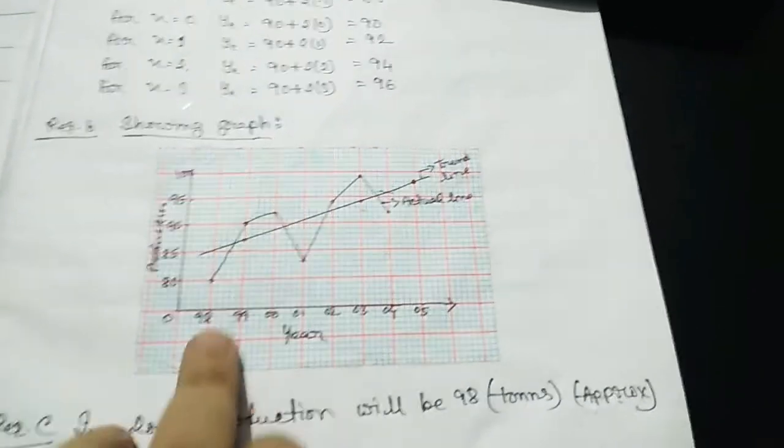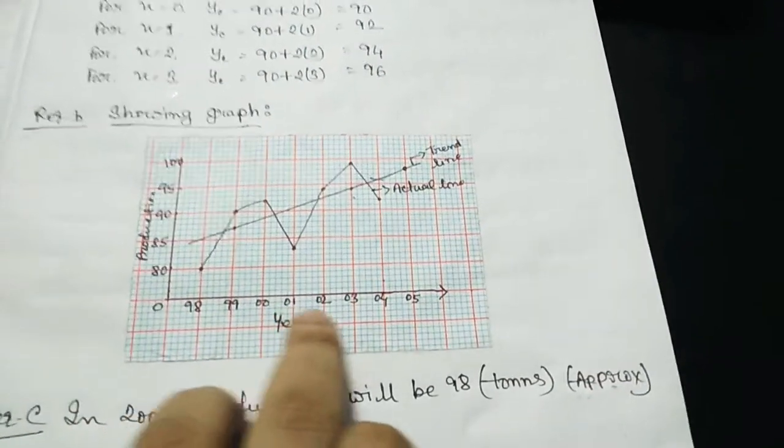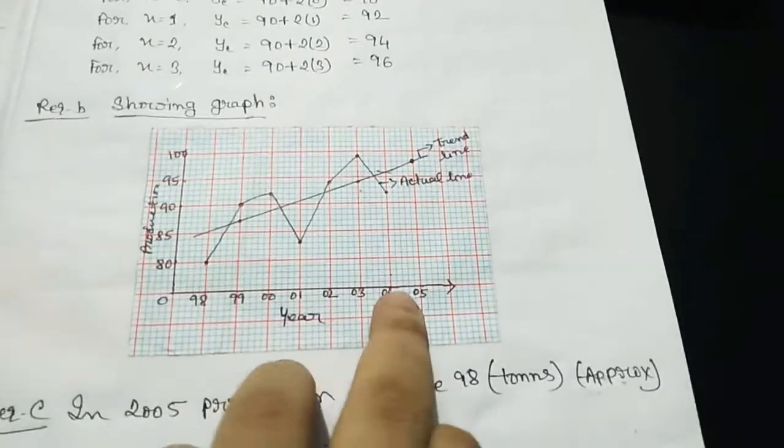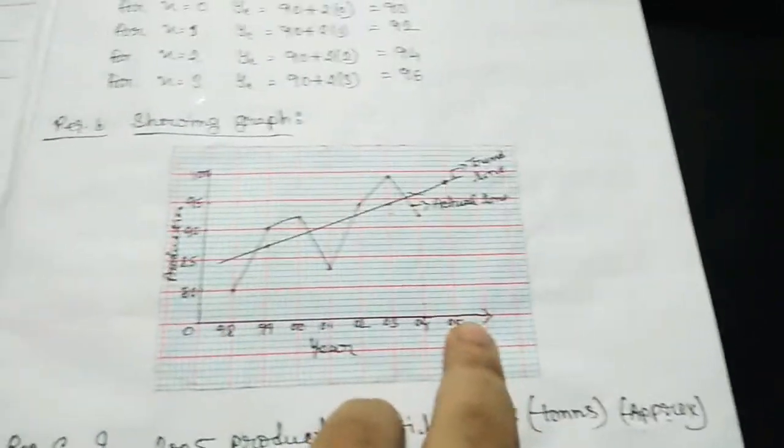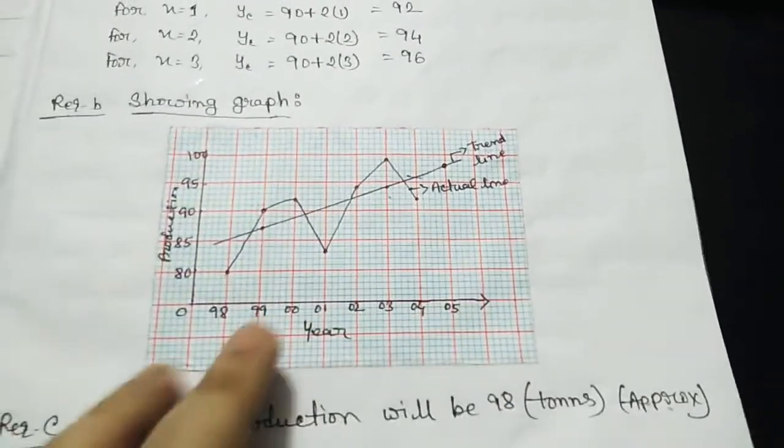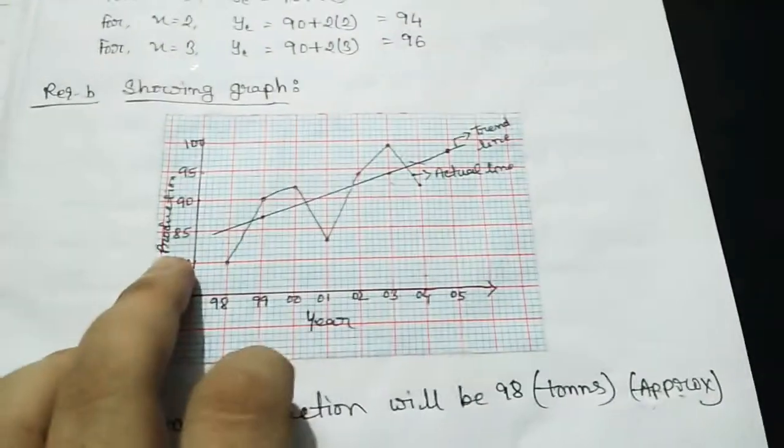The first thing we know is that the 98, 99, 0, 2000, 2001, 2002, 2003, 2004. What do we know about it? We don't know about trendline.